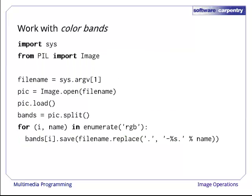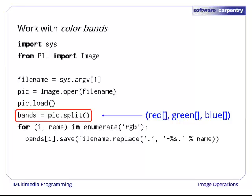Instead of thinking about an image as a bunch of pixels each of which has red, green, blue values, it's often more useful to think of it in terms of three parallel planes of color, each of which contains a single intensity value for either red, green, or blue. This program loads an image, then uses the split method to separate its color components into separate monochrome images, which it saves in three separate files.